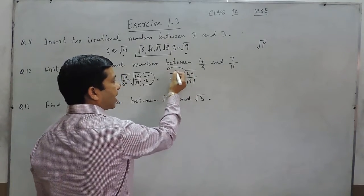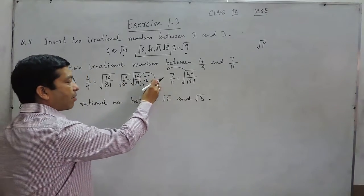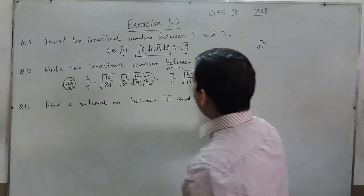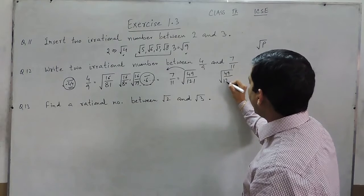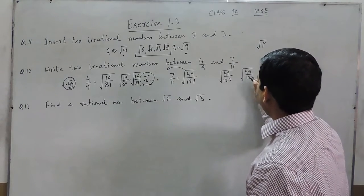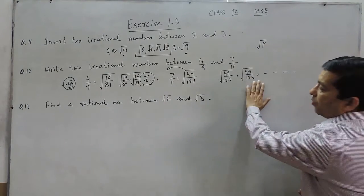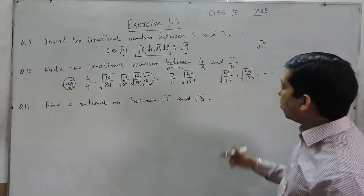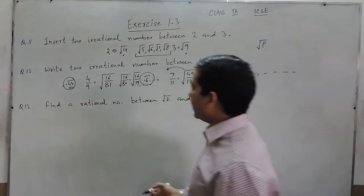Same is the case, if in case we understand that 7 upon 11 is approximately 0.66, we need the numbers which are less than this. Now less than this means the denominator should be more. So under root of 49 upon 122, under root of 49 upon 123, all these numbers will be treated as irrational numbers which are less than 0.6. Definitely they are going towards 0.4. So this way we can put more than 2 irrational numbers in between.